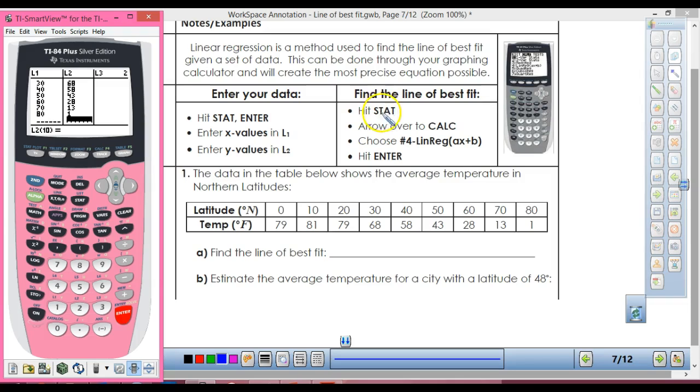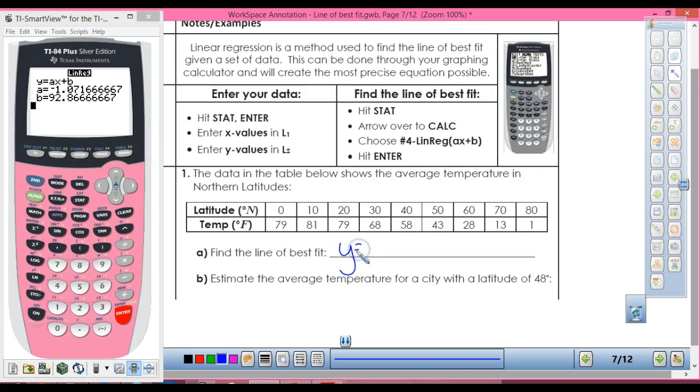So now you're going to hit stat again, and then you have to arrow over so that you're on calc. So arrow over one. Now you've got all these options. We want number four, because see how it says ax plus b? It looks a lot like mx plus b, right? We want number four. And then you can just keep hitting enter all the way down, calculate, until it shows up like that. So notice how up here it says y equals ax plus b, right? And then it tells you what a is and what b is. So we're going to write our equation based off of that one. So y equals, what's my a? Negative 1.07. You always do two decimal places.